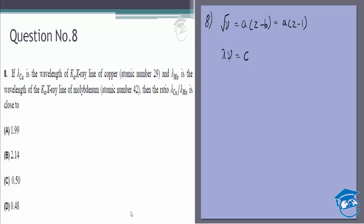So in this case, mu is inversely proportional to Lambda. That means Lambda Cu by Lambda Mo is equal to mu Mo by mu Cu, right? Because they're inversely proportional.